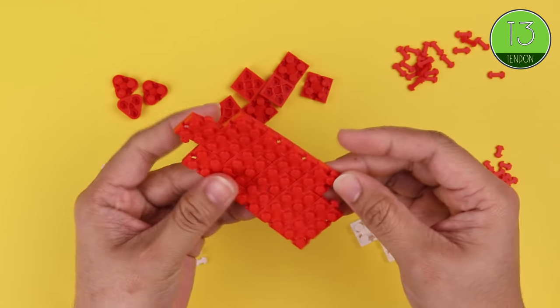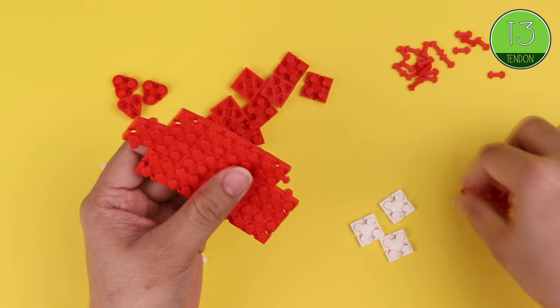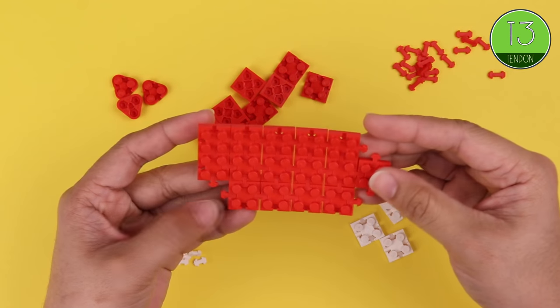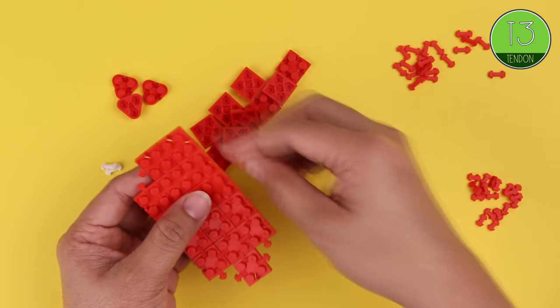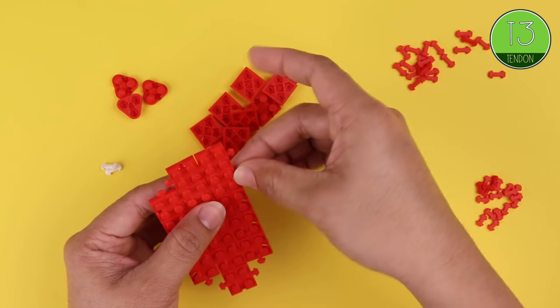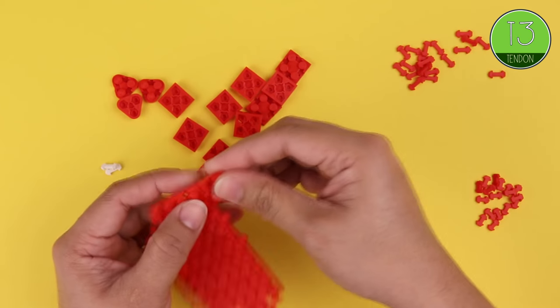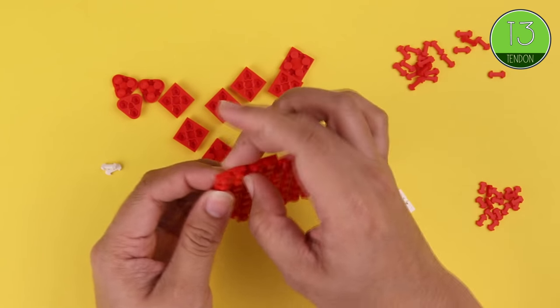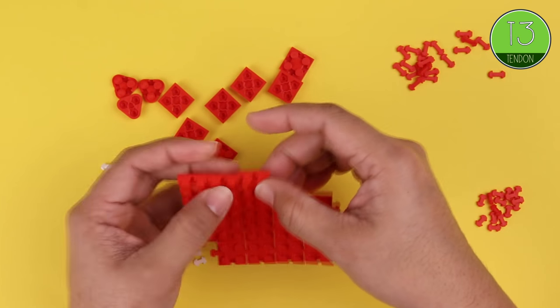We just keep repeating the pattern: adding a T3 and a square, and then T3 and a square, and we're starting to make an L shape now.